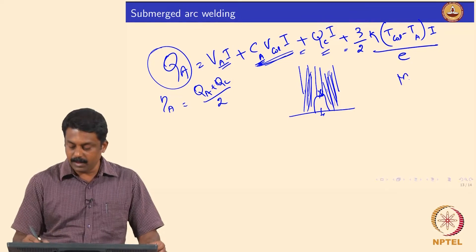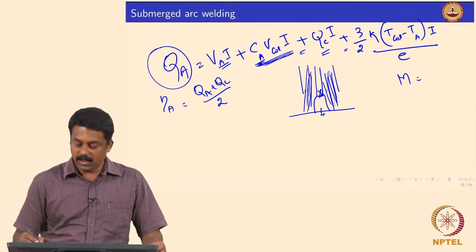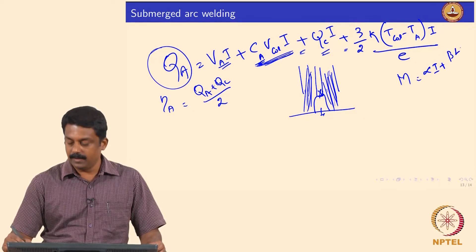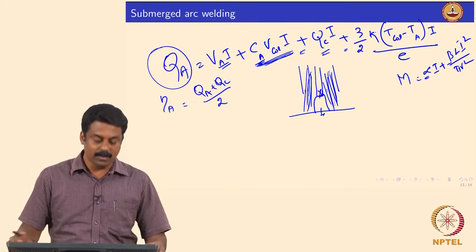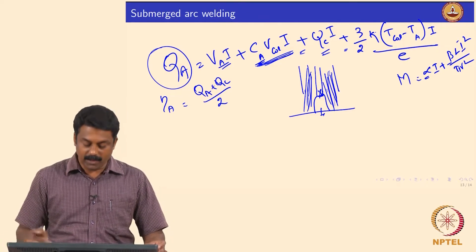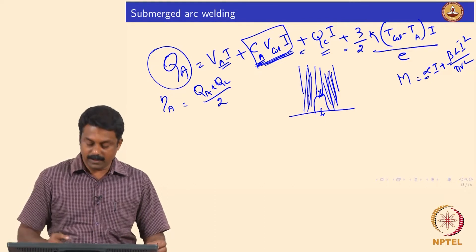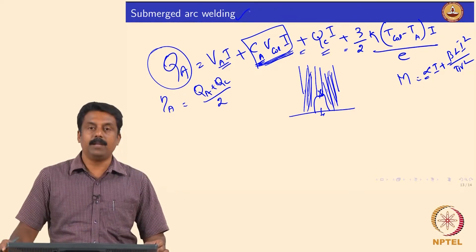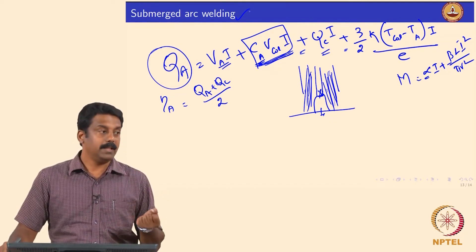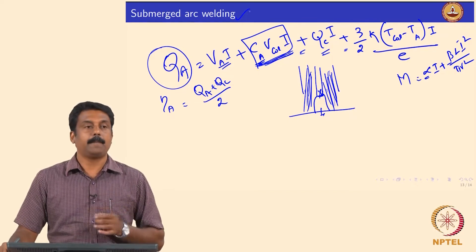By adding flux as an envelope to the arc, we protect the arc, maximize heat transfer from the arc to anode and cathode, and thereby increase the melting efficiency. The melting rate M is still calculated using M = (alpha × I + beta × L × I²) divided by the relevant term, and by increasing the CA factor the same equations apply for anode or cathode electrode. In the submerged arc welding process, efficiency can be increased close to 100 percent by completely protecting the arc from the atmosphere using fluxes.